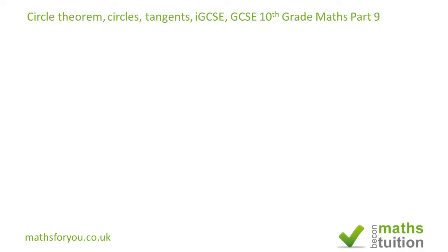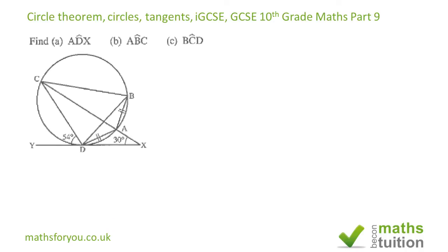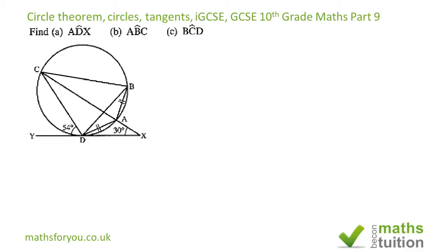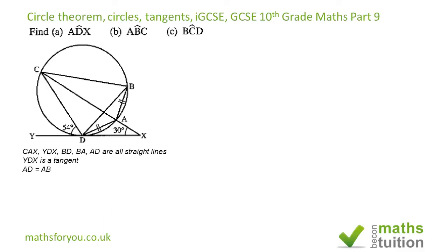Hello and welcome to this exercise on circle theorems. This is part of my series on circle theorems and I got this exercise from an IGCSE higher tier textbook. I'm doing it because it's all jumbled up, so you need to have a clear head. We need to find angles ADX, ABC, and BCD. We're told that CAXY, DX, BD, AD, and AB are straight lines, and that AD is equal to AB.